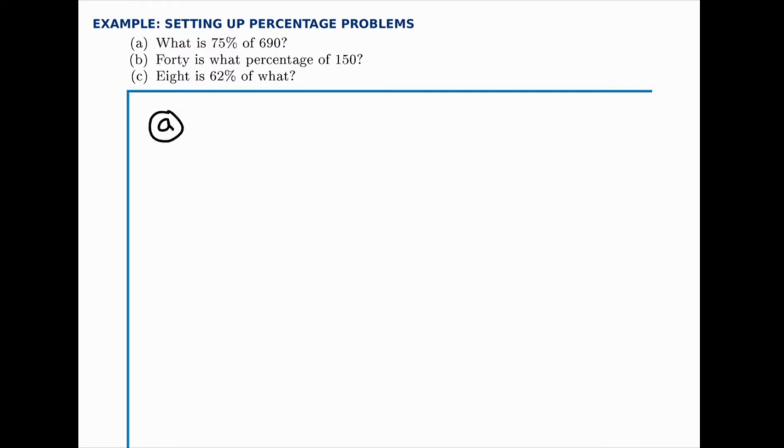Part A says, what is 75% of 690? And remember, when we see the what, the unknown piece, we'll just replace that with x.